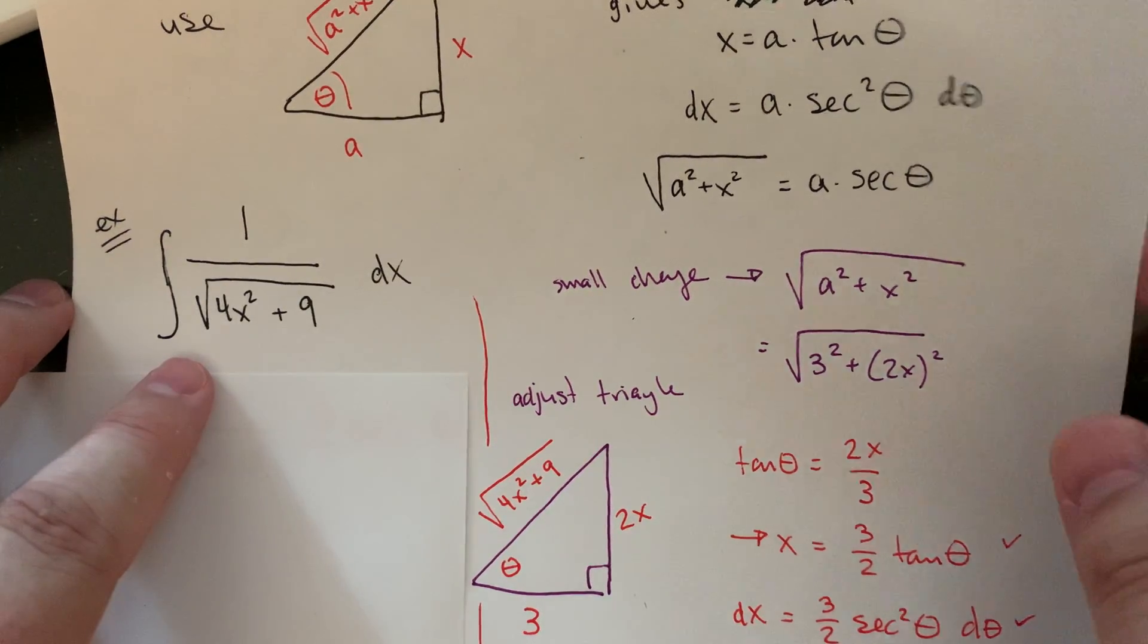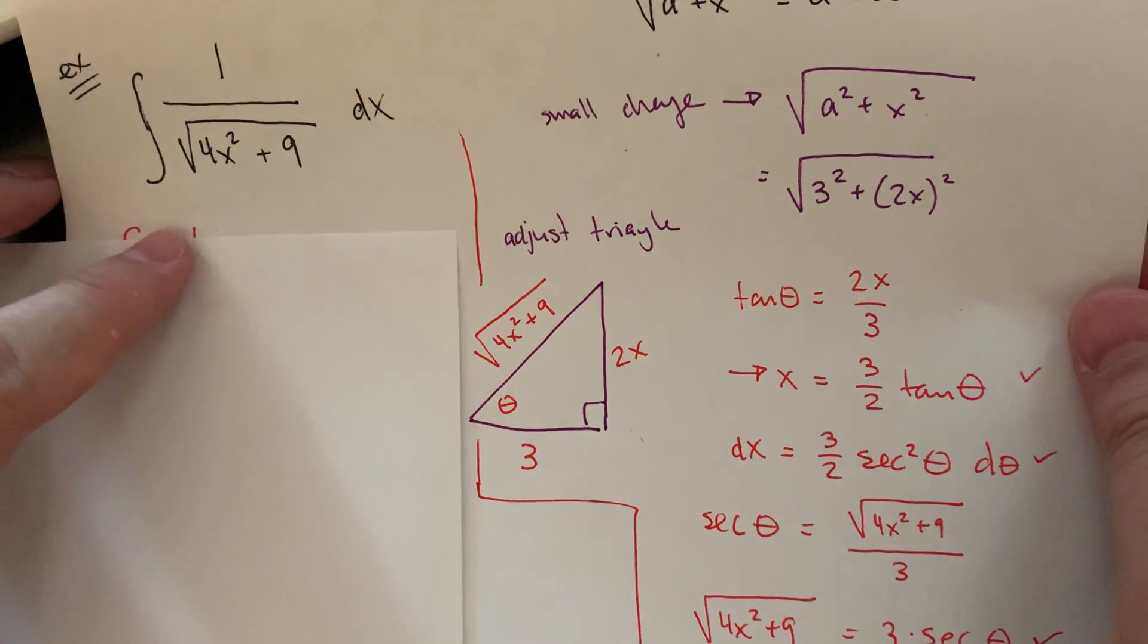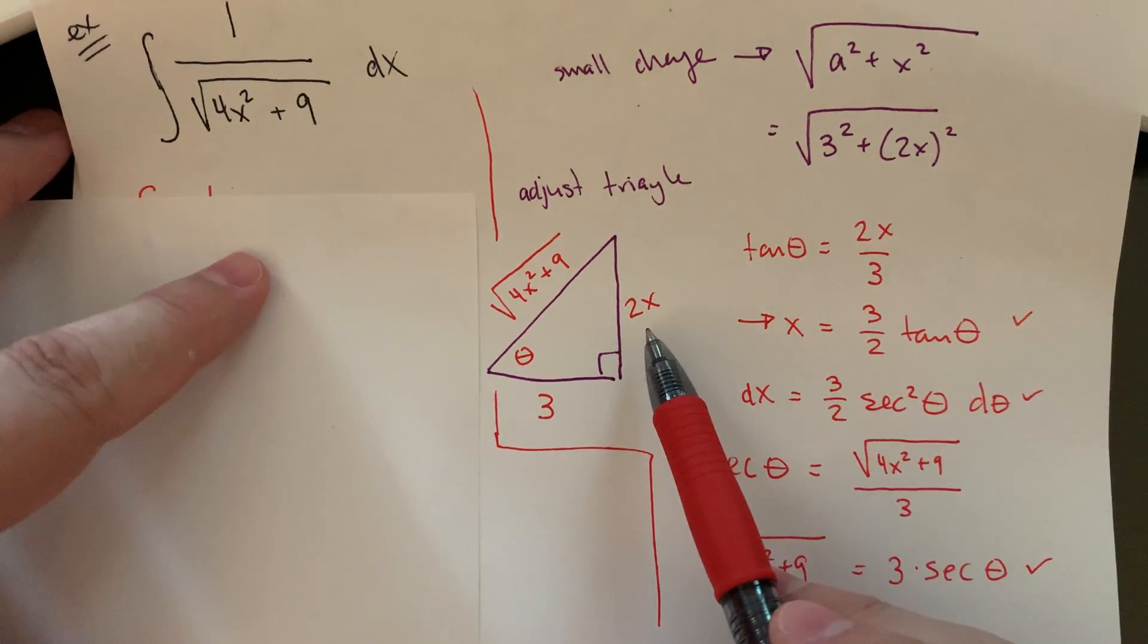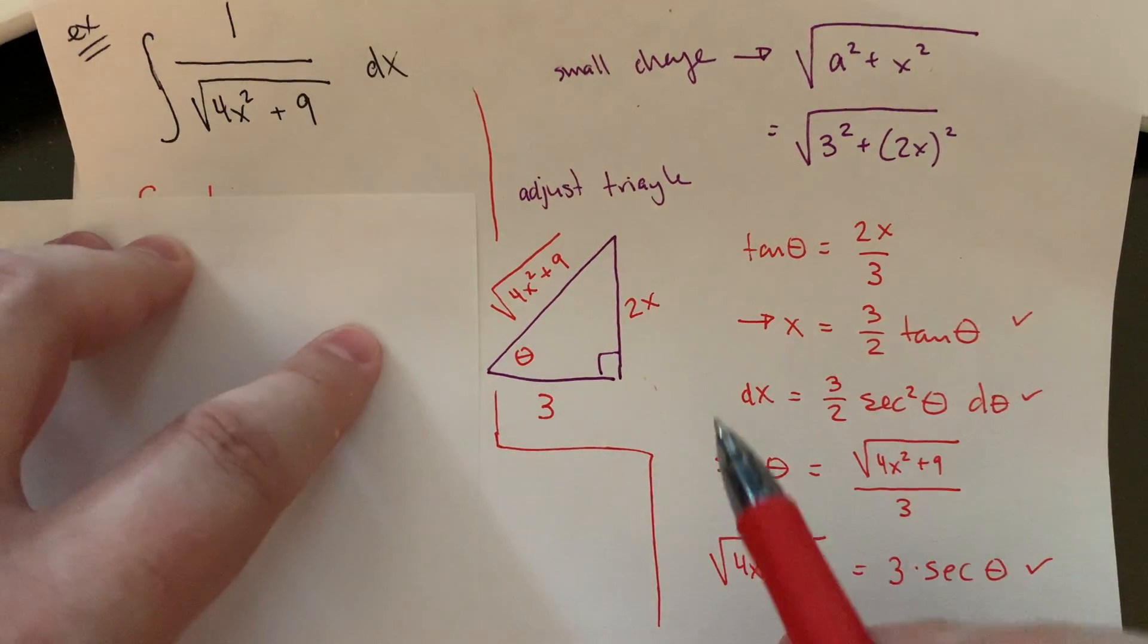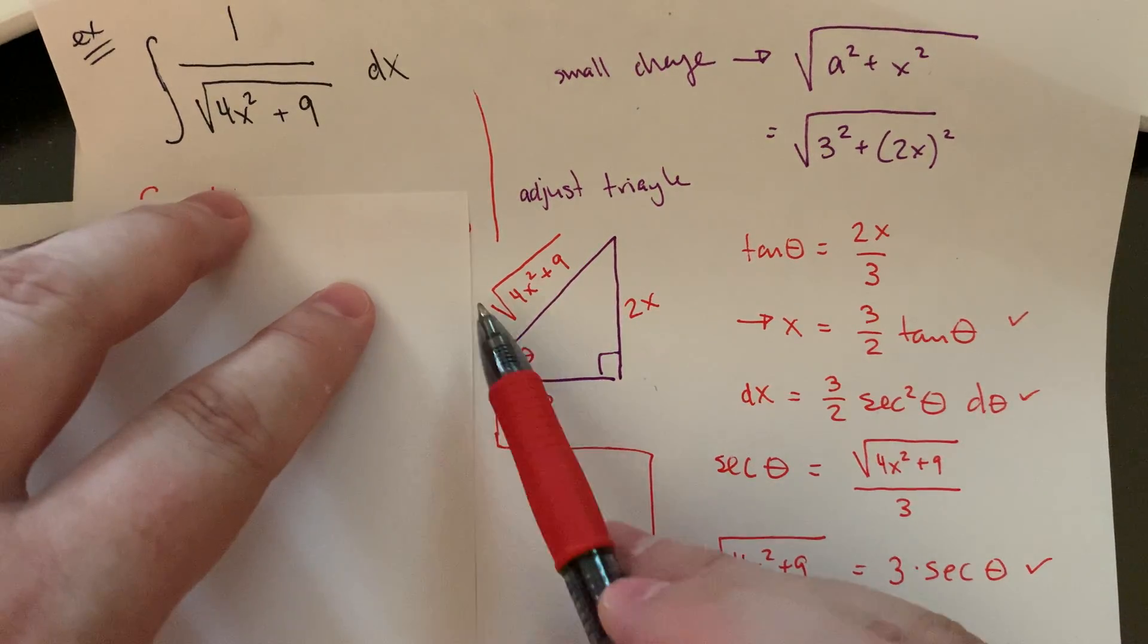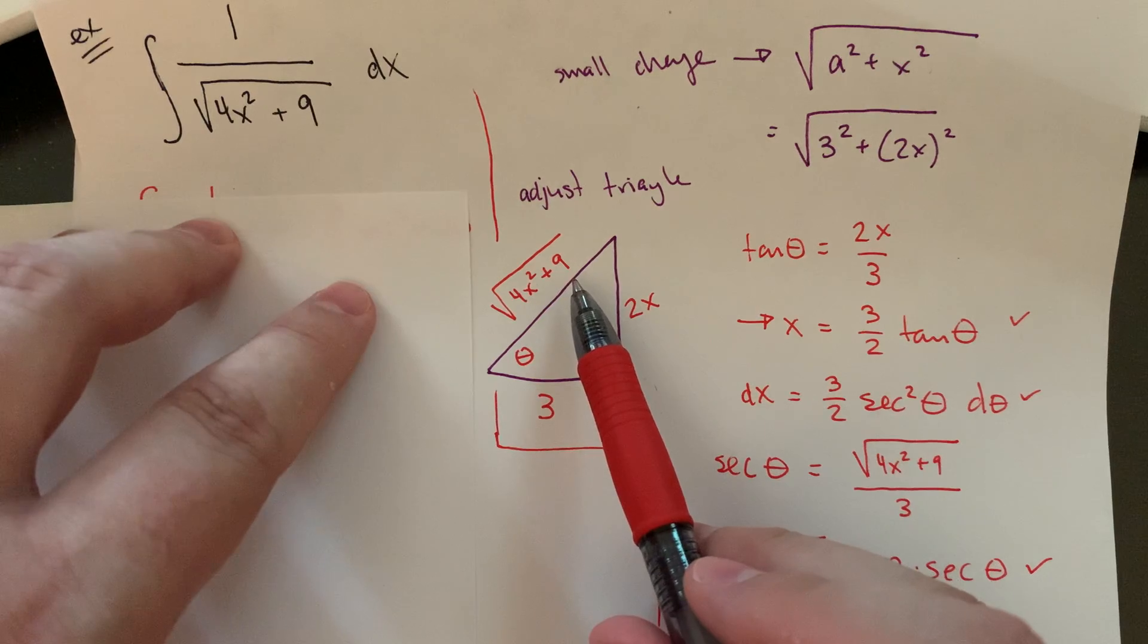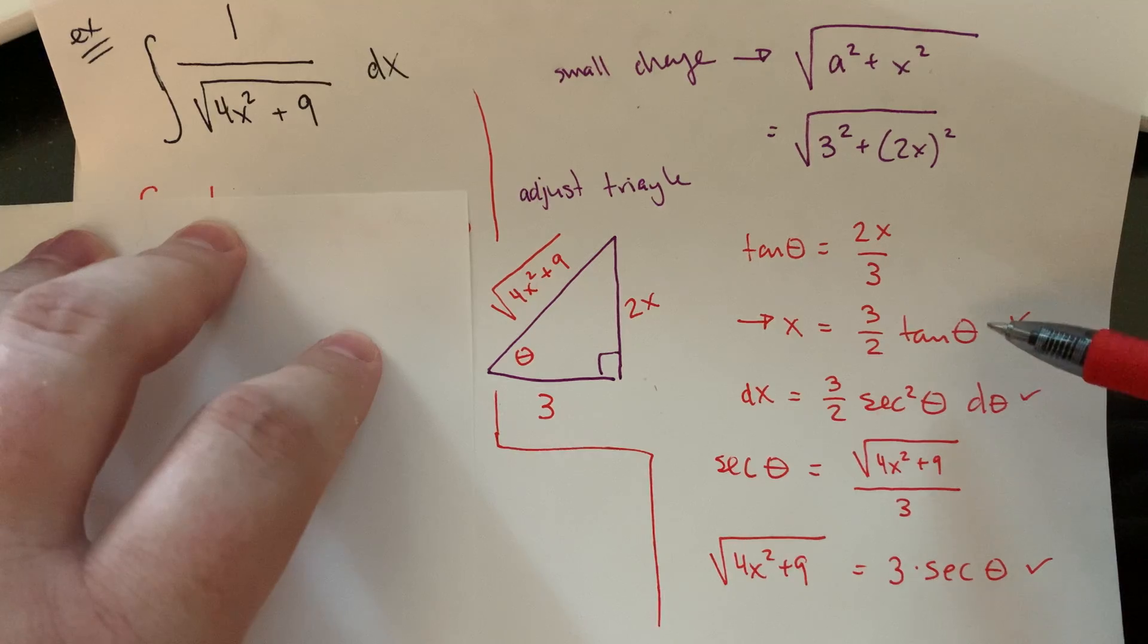It might seem like maybe we need to do some sort of extra wild substitutions or something like that. But it's honestly not that big of a deal. All we need to do is just draw our triangle, where instead of having this side length be x, just use 2x instead. The whole idea is you're trying to set up and get this hypotenuse, in this case, to be the root of 4x squared plus 9. So you need it to be, well, 2x squared is 4x squared, and then 3 squared is 9. And so if we just do that, everything else falls into place.